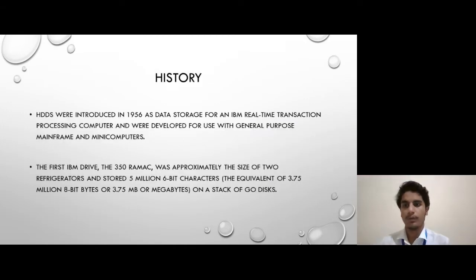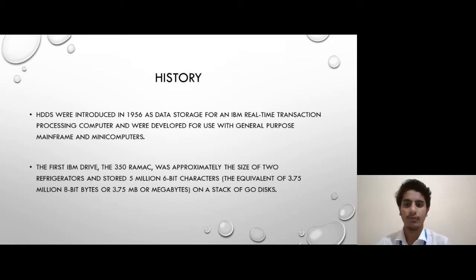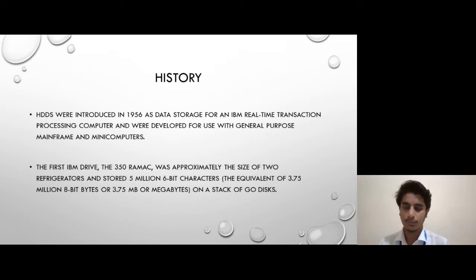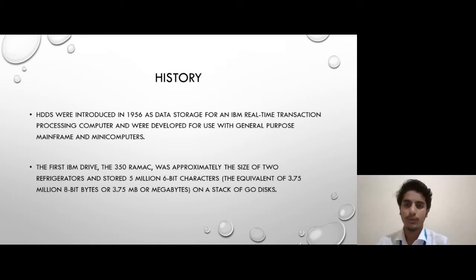Now we learn about the history of hard disk. The hard disk was first introduced in 1956 as a data storage for real-time transactions and was developed for use with general purpose mainframe computers. As it evolved, hard disk size became smaller and its storage capacity increased.